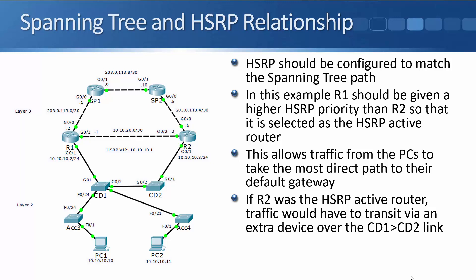CD1 is the root bridge and I'm going to configure R1 as the HSRP active gateway. So if traffic goes from PC1 up to the internet, it goes via Access 3, CD1, and then R1. And if traffic is coming from PC2, it goes from PC2 to Access 4 to CD1 and then R1. If R2 was my HSRP active gateway, traffic from PC1 would go to Access 3, then CD1, then CD2, and then R2. So it's having to take an extra hop over my core distribution switches. You want to line up your HSRP and your spanning tree configuration so that traffic goes over the most direct path at layer 2 with spanning tree and at layer 3 with HSRP as well.